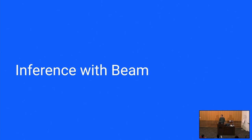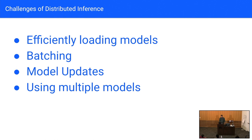Jumping to one of the more core parts of machine learning: distributed inference. Distributed inference can be hard. It's hard to efficiently load your models — if you have a 40-gigabyte model, you don't want to be loading it 15 times across all your processes, but you want several processes feeding it. Efficiently batching your data can be challenging. Doing live model updates can be hard — if you've got a production model and want to update it in real time, that's challenging without incurring downtime. Using multiple models and efficiently balancing resources can also be challenging. Within the ML space, this is probably where Beam shines the most.